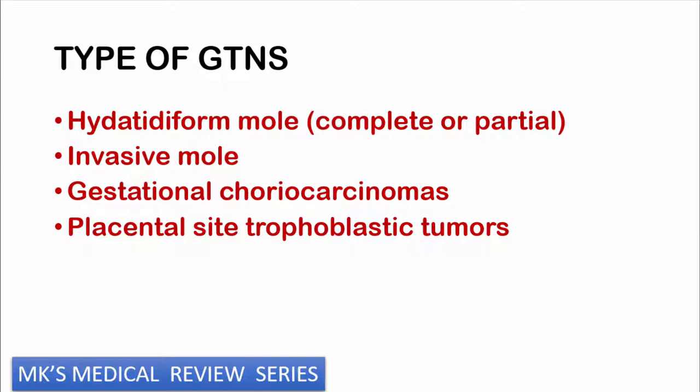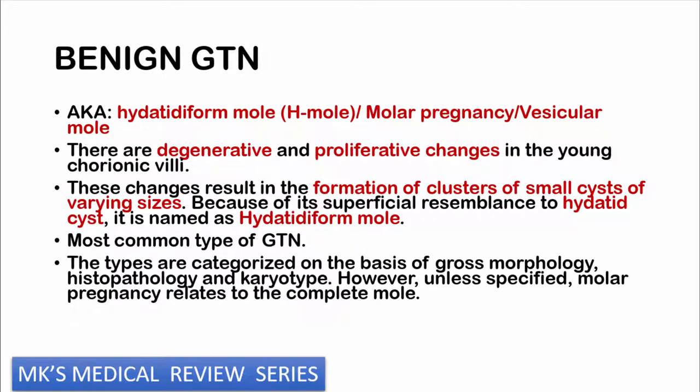There are four types of neoplasms. We'll go into detail on hydatidiform moles, which can be either complete or partial. We'll talk about invasive moles, gestational choriocarcinomas, and placental site trophoblastic tumours. We begin with benign gestational trophoblastic neoplasms, also known as hydatidiform moles — you can call them H moles or molar pregnancies.